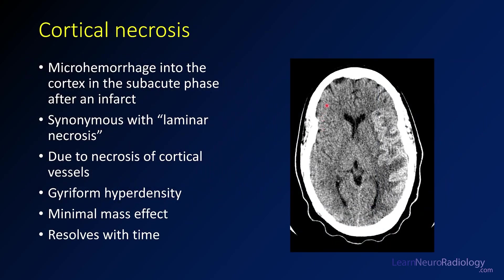Cortical necrosis, as I mentioned, is microhemorrhage into the cortex following a gyroform pattern. You'll hear the term laminar necrosis — that's the pathologic term for necrosis of the layers of the cortex. Due to necrosis of the vessels that run along with them, you get hyperdensity there, which washes out with time and has minimal mass effect. It's not really considered a hemorrhagic conversion because it doesn't have mass effect, and you can continue these patients on anticoagulation or antiplatelet therapy if needed.